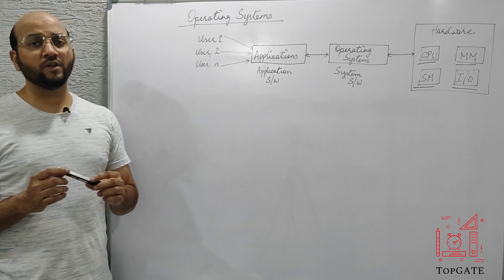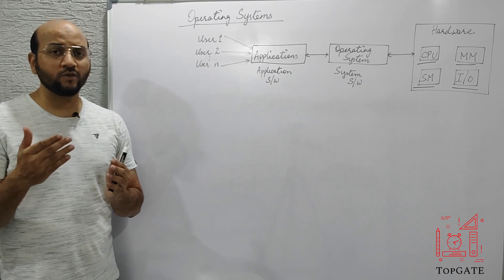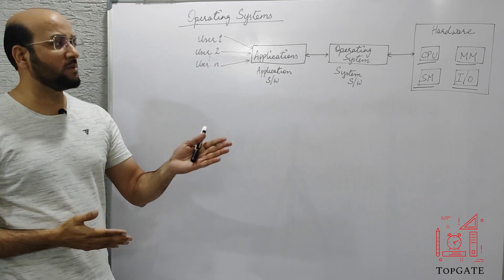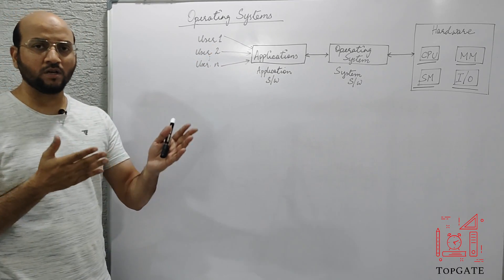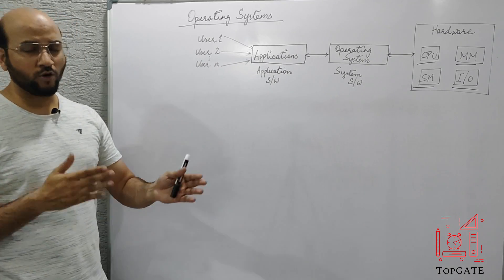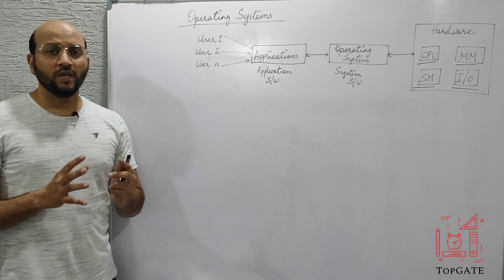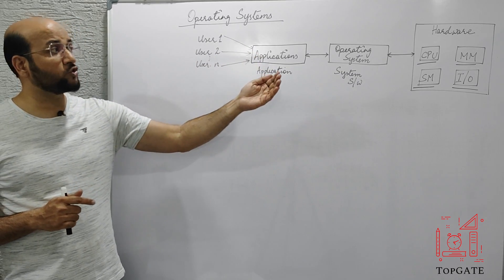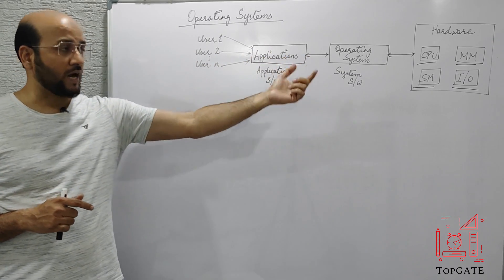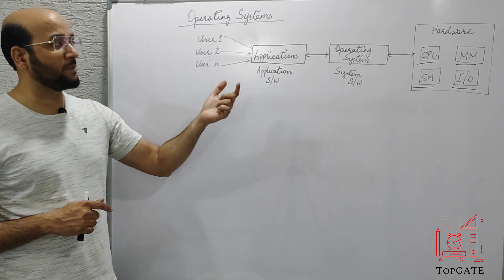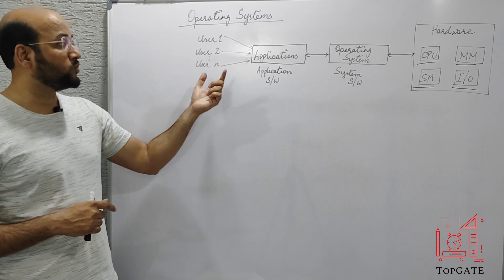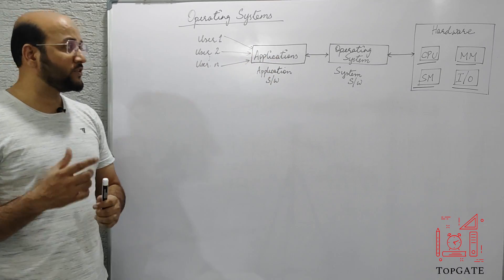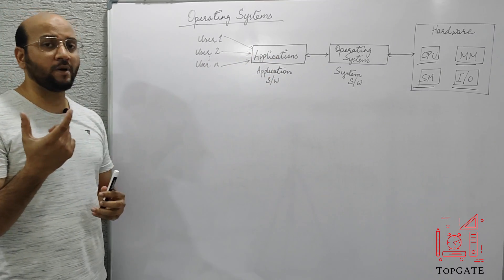If we talk about the hardware of the computer system, we have a CPU, we have a main memory, we have a secondary memory — like we have a RAM, we have a hard disk drive, we have a keyboard, mouse, printer, scanner, monitor. So if the user wants to use the capabilities of this hardware, the user cannot use the capabilities directly. The user has to first interact with some intermediate node, and this intermediate node is provided by the operating system.